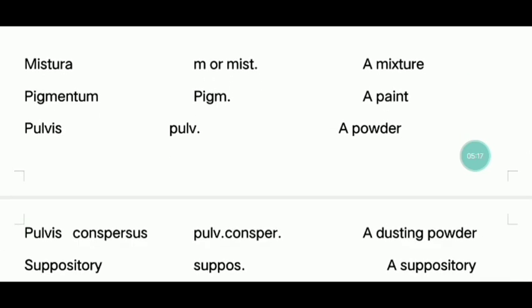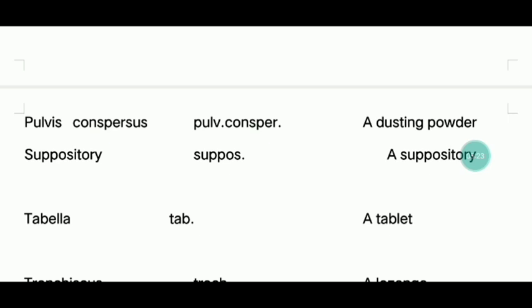Pulvis — powder — fine, grinded powder. Pulvis also refers to dusting powder. Dusting powder is a powder used to treat antifungal infection.